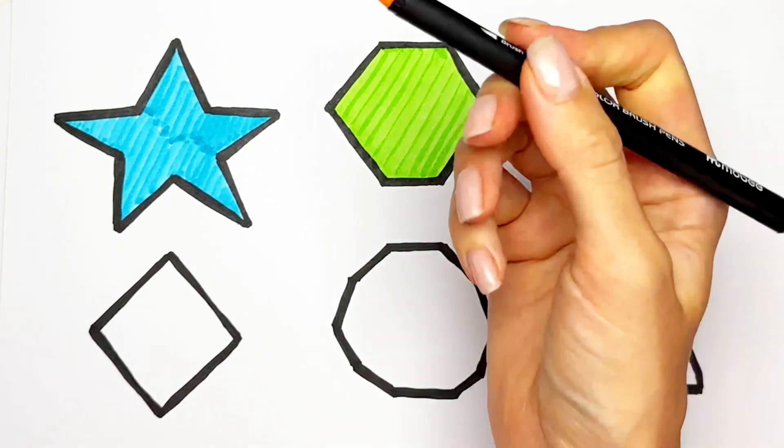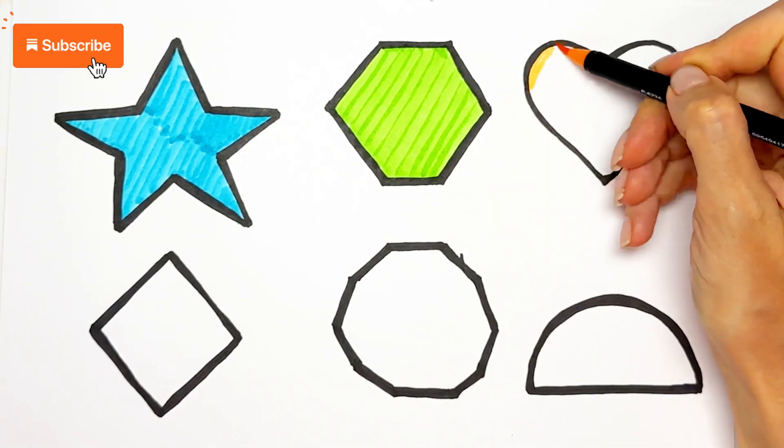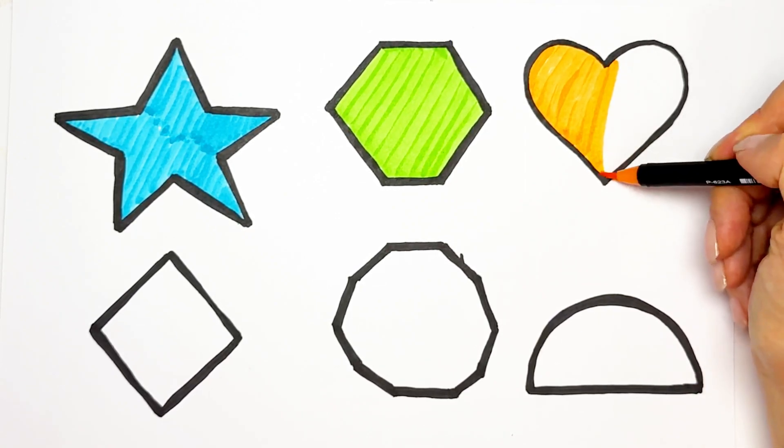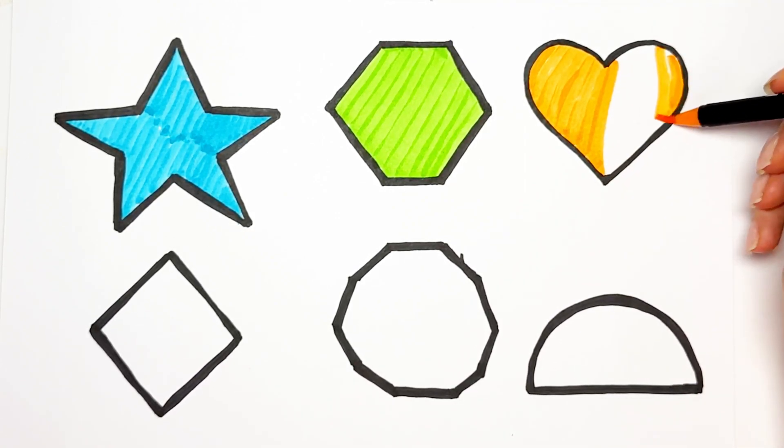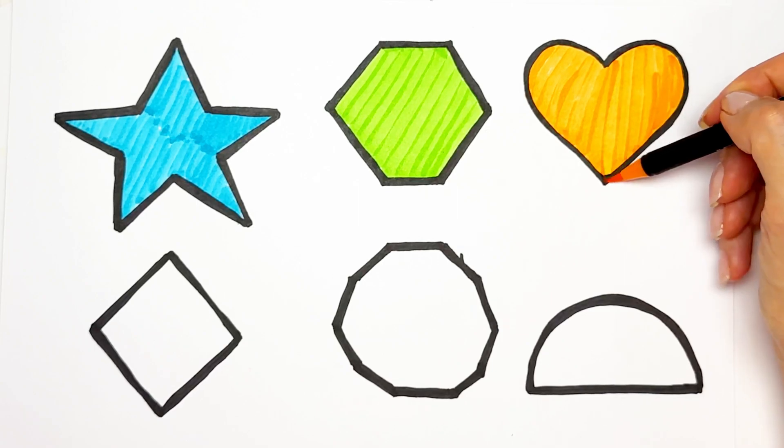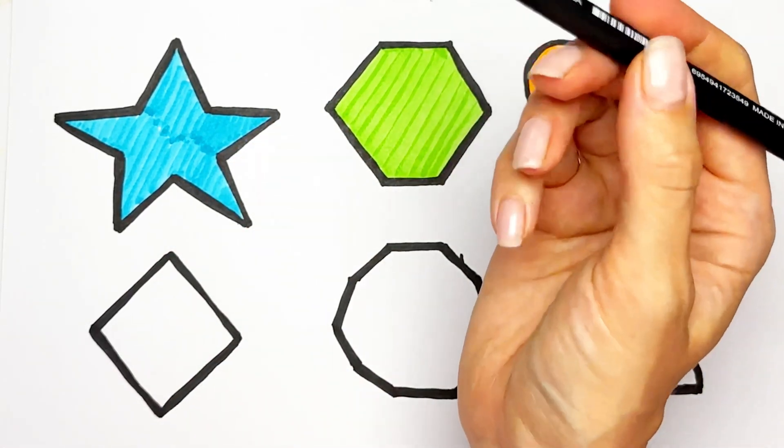Orange color for heart. Yellow color for rhombus.